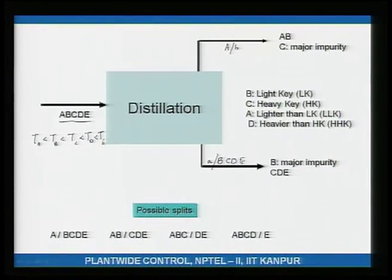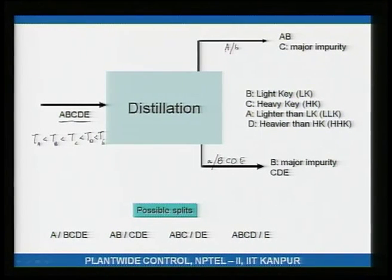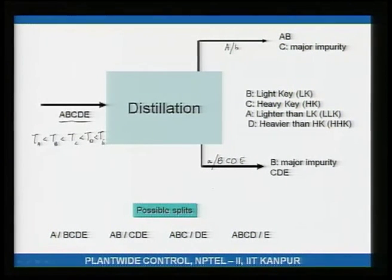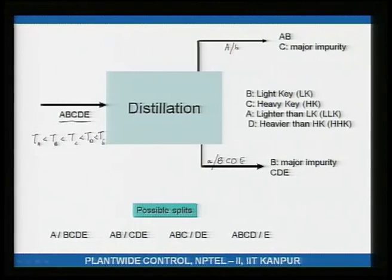A is sent to the top and B to the bottom. Some B comes out the top and some A goes down the bottom. The major impurity in the distillate is B, and the major impurity in the bottoms is A.